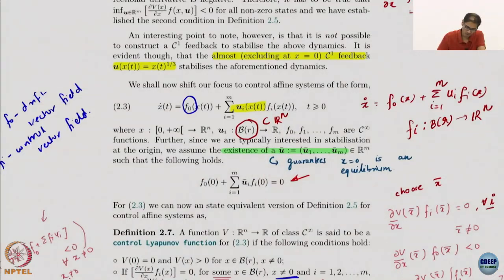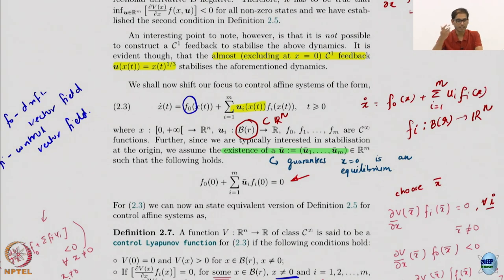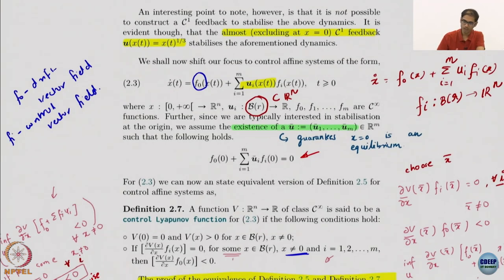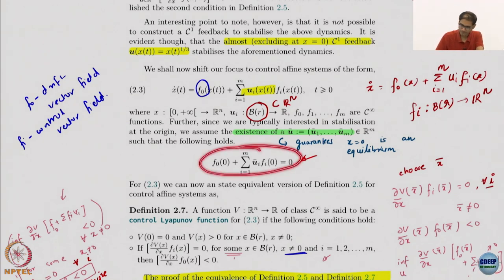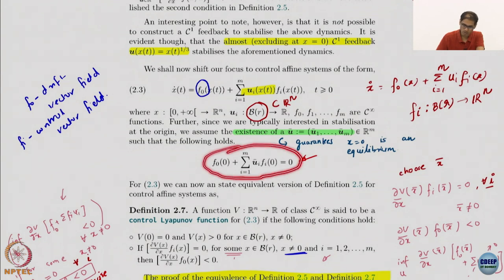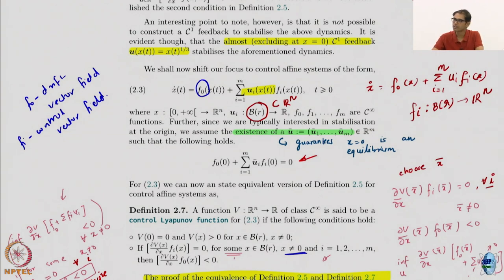We start focusing on control affine systems. It is affine because there is no control connected to this term, so it is not even linear in the sense linear is defined. We assume because we are interested in looking at equilibrium, the origin is the equilibrium. We definitely assume that there exists an equilibrium control such that F0(0) plus the summation of u_i_bar times F_i equals 0. So we assume the existence of an equilibrium control.